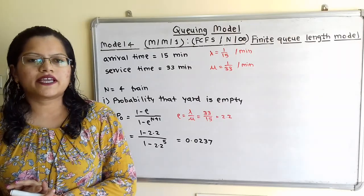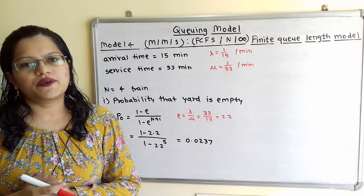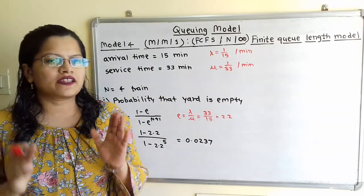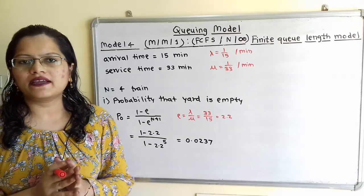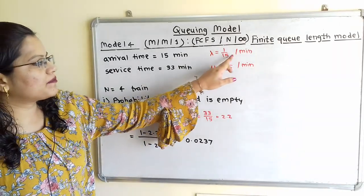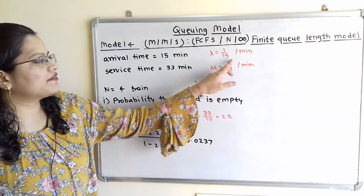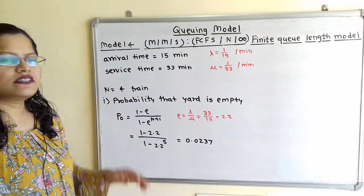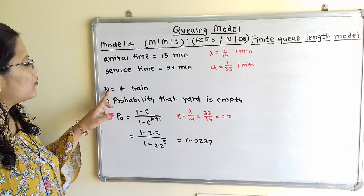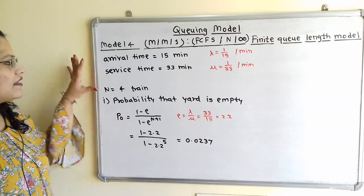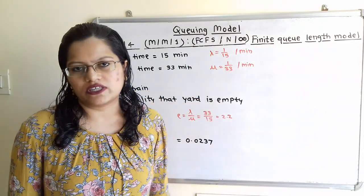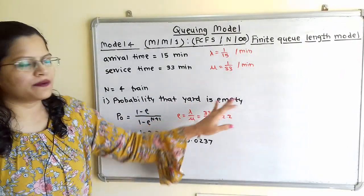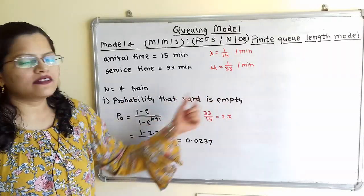From the given data: arrival time = 15 minutes, so λ = 1/15 per minute; service time = 33 minutes, so μ = 1/33 per minute. The capacity of the yard is 4 trains, so capital N = 4. This question falls under Model 4 — the finite queue-length model. The first question asks for the probability that the yard is empty, i.e., we need to find P(0).